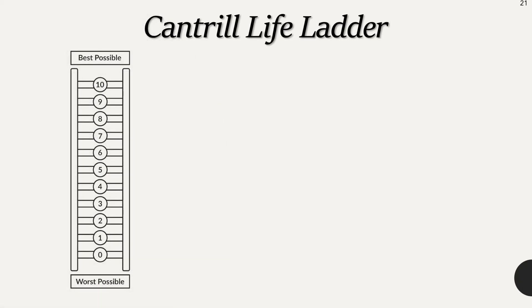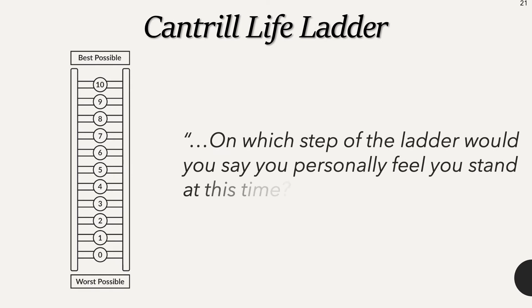The happiness score is based on the national average response to the Cantrell life ladder question, which states: imagine a ladder with steps numbered from 0 at the bottom to 10 at the top. The top of the ladder represents the best possible life for you, and the bottom of the ladder represents the worst possible life for you. On which step of the ladder would you say you personally feel you stand at this time?